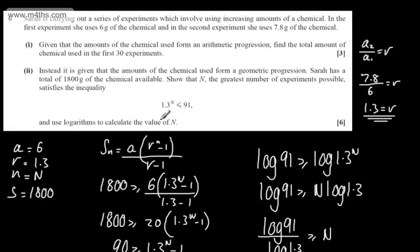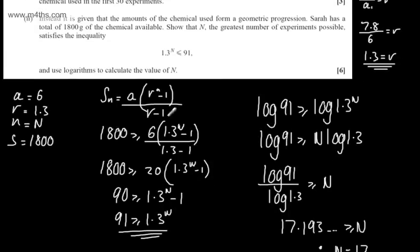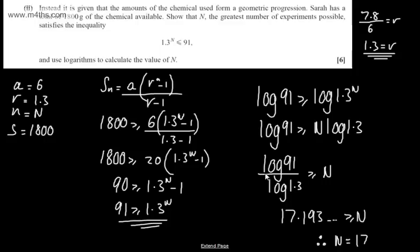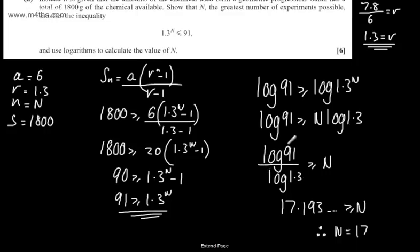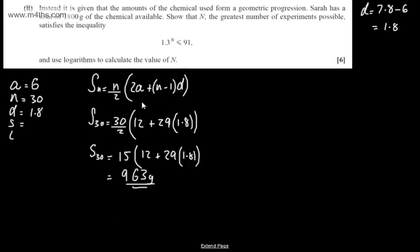So, in the first part of the question, we've used an arithmetic progression. In the second part, a geometric. A couple of different ways around it, but this should be the answer that we get on the second part. And then on the first part, we should have now 963 grams.